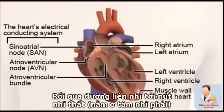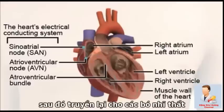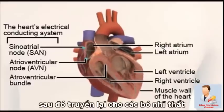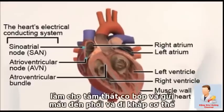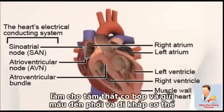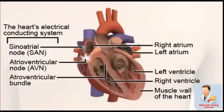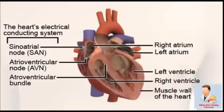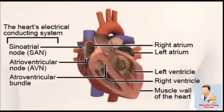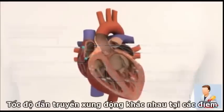The impulses reach the atrioventricular node, which is between the right atrium and ventricle, and pass onto the atrioventricular bundle, causing the ventricles to contract and send blood to the lungs and around the body.